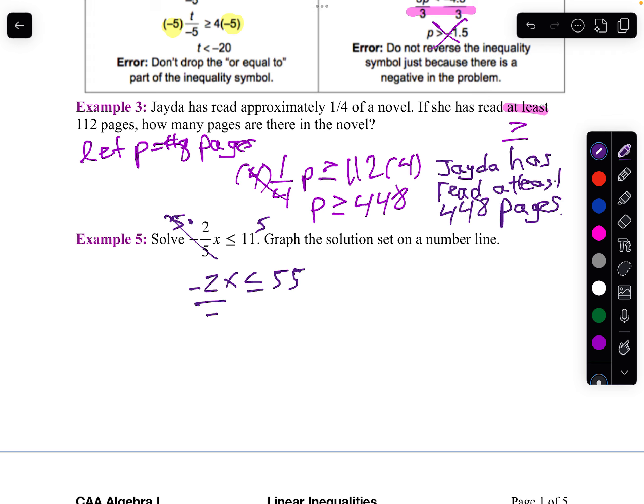Now I'm going to divide both sides by negative 2. So x, I'm going to flip it. And I'll get negative, what is that, 27.5 or negative 55 over 2. I think, since we're doing this in the seminar, I'm going to write it as negative 55 over 2.